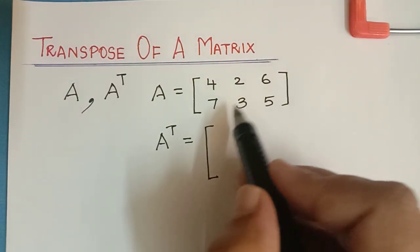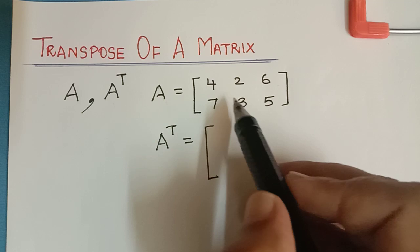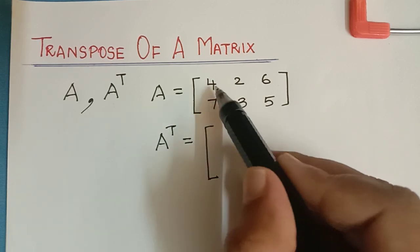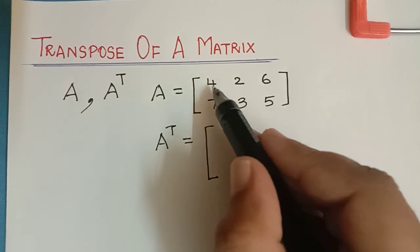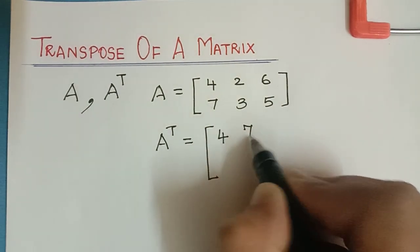The rows should become columns and the columns should become rows. For example, the first column is 4, 7, so this column will turn into a row for the transpose matrix.